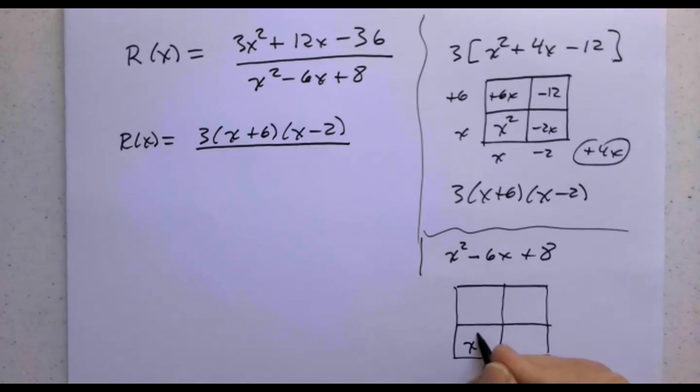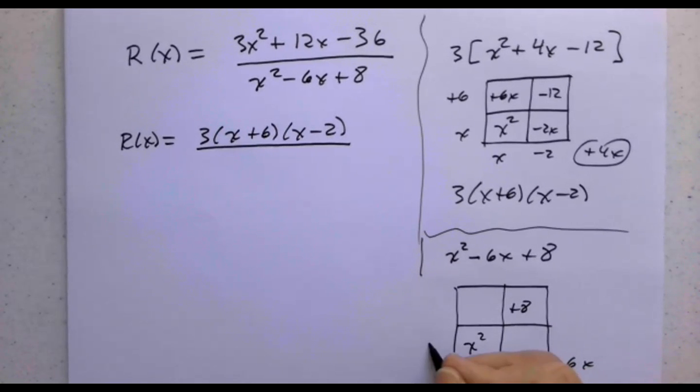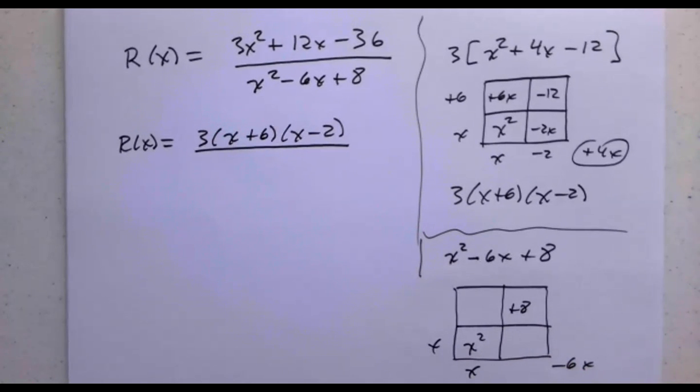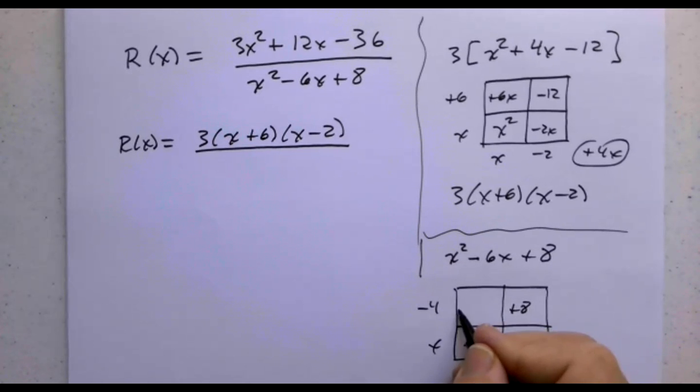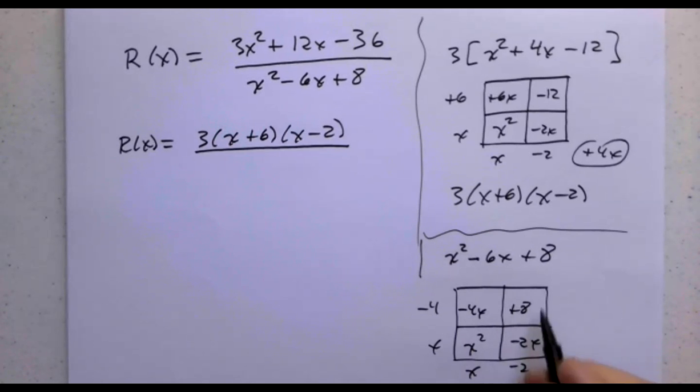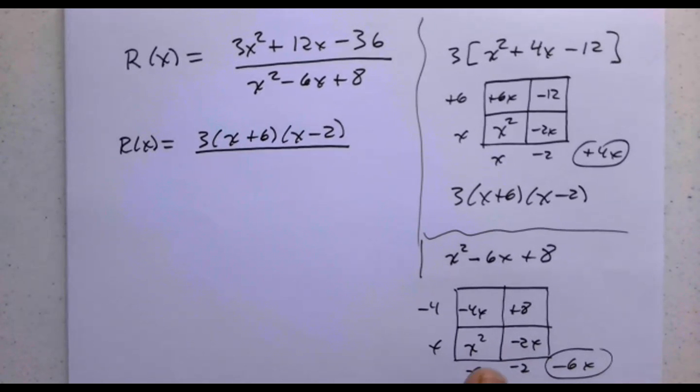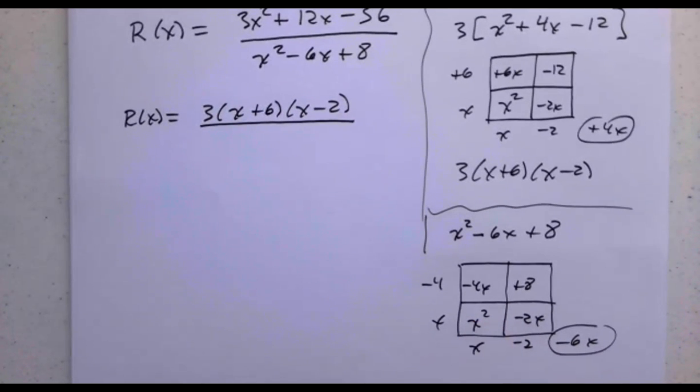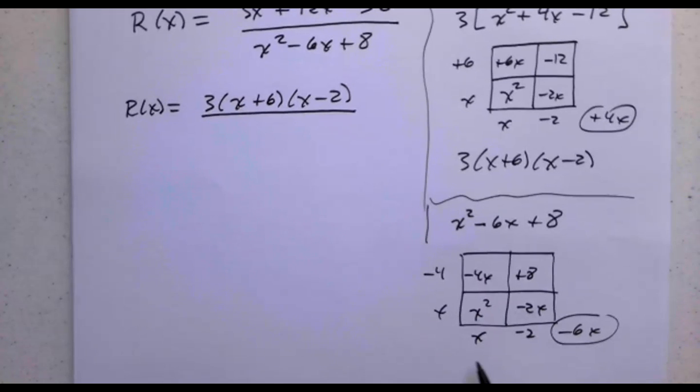x squared is here, 8 is here, minus 6x is here. x times x, I think minus 4 and minus 2. Minus 4 times x is minus 4x, minus 2 times x is minus 2x, minus 2 times minus 4 is plus 8. They add up to negative 6. So I get x minus 4 times x minus 2.